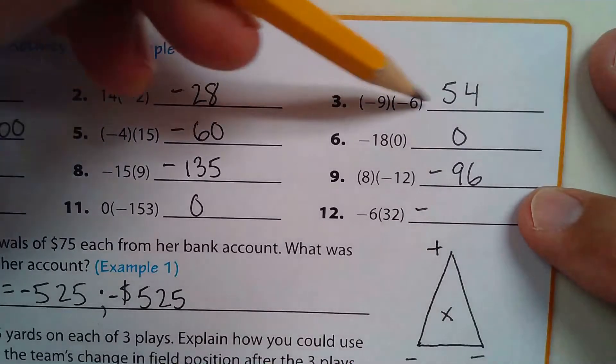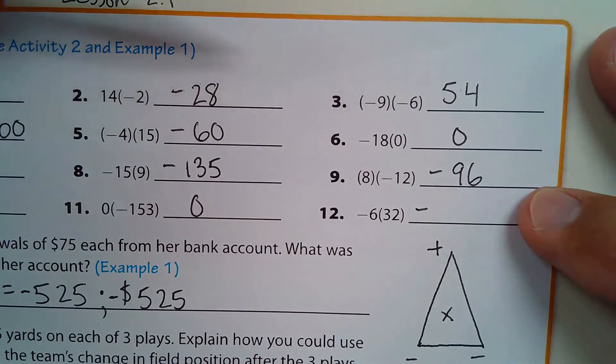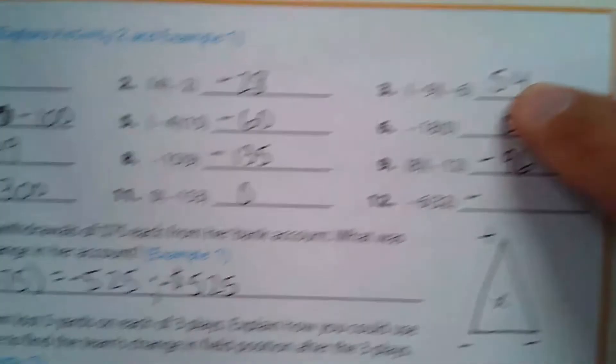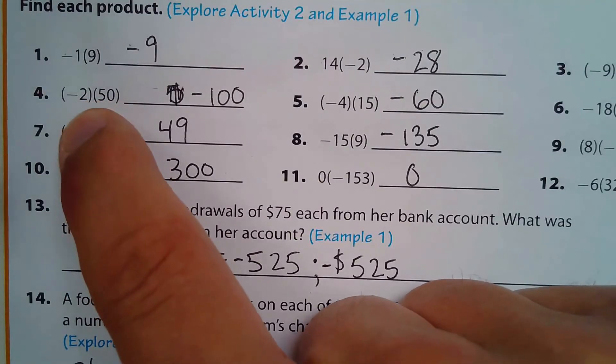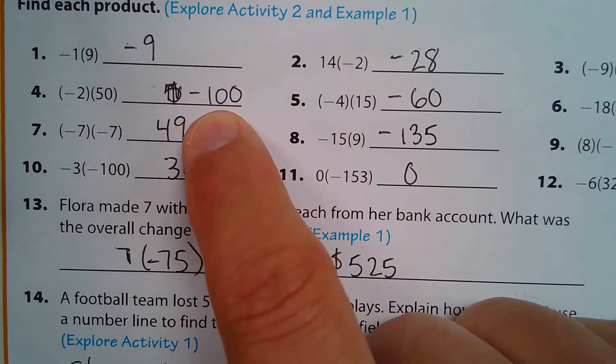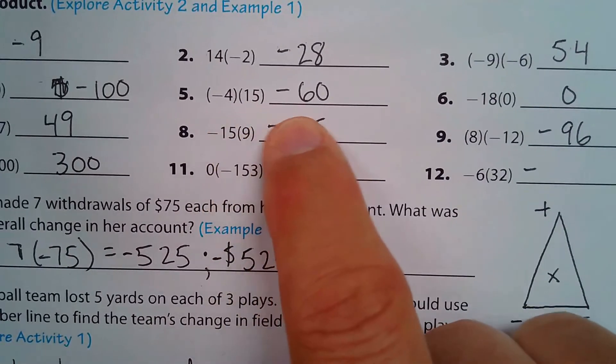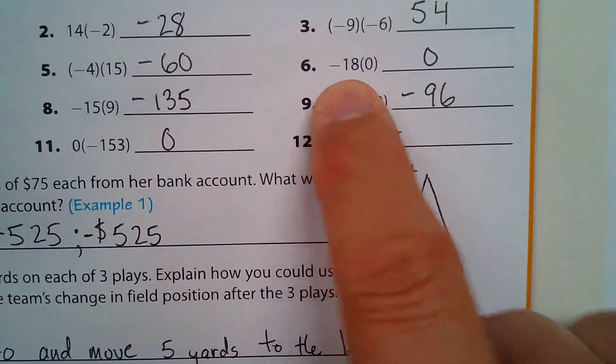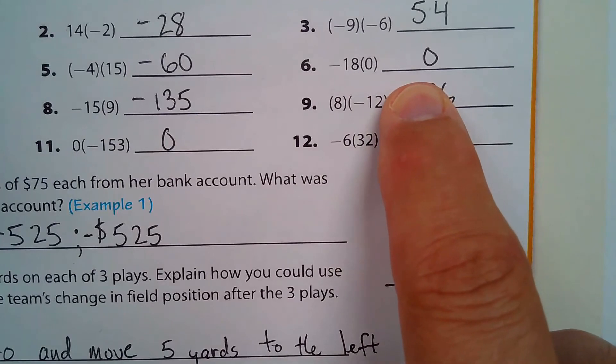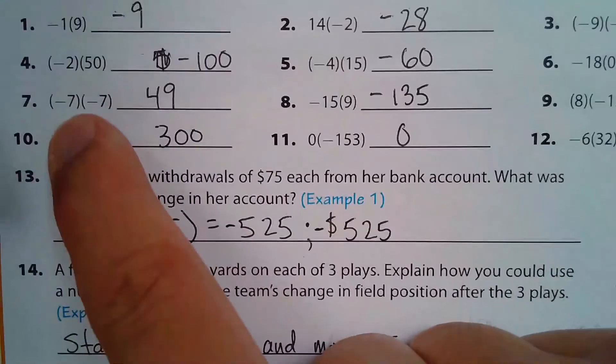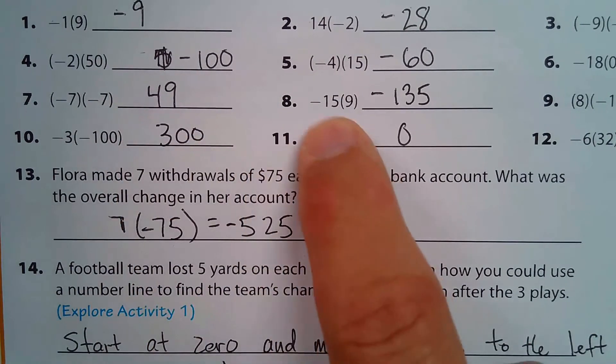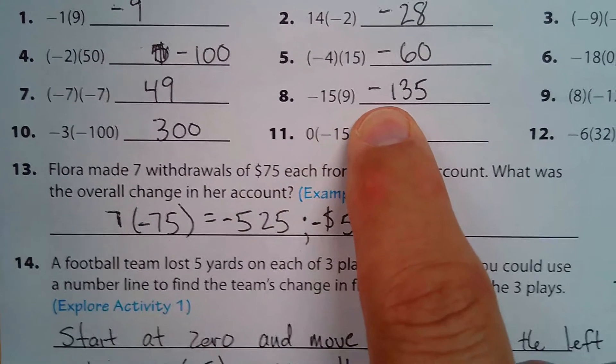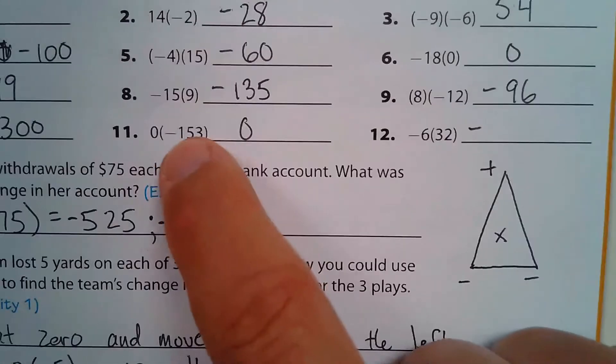9 times 6 is 54. Negative times negative is positive. Basically, if you have one negative, then the answer is going to be negative. 2 times 50 is 100. 4 times 15 is 60. Anything times 0 is 0, so there's no negative 0s or anything like that. Negative times negative, positive 49. You got one negative here, it's going to be negative.